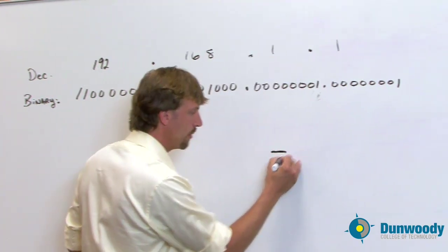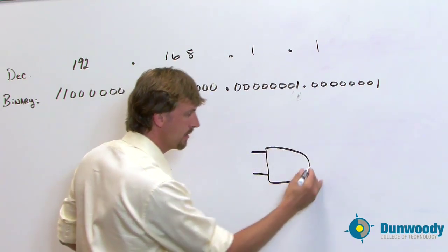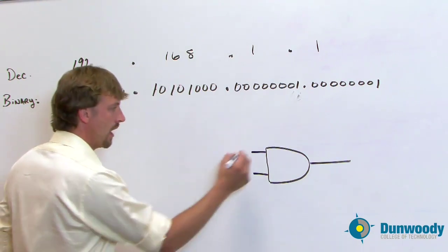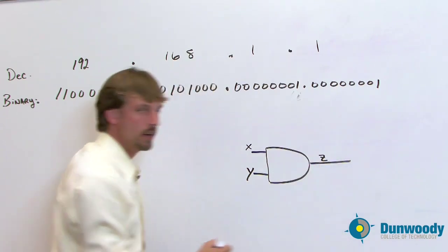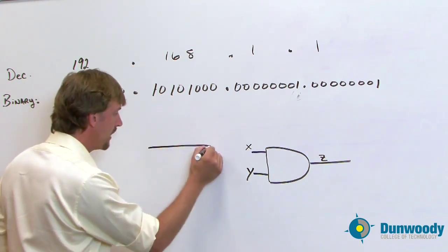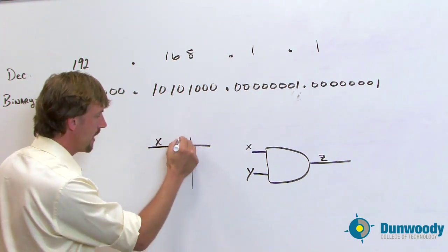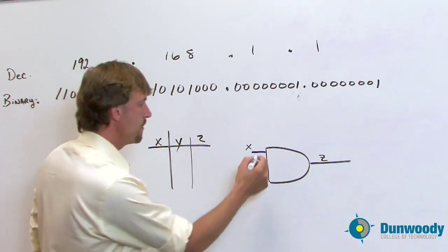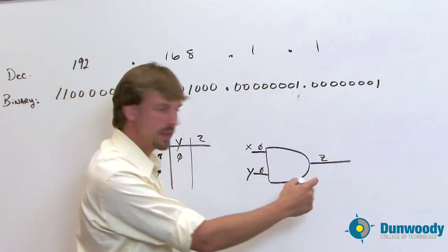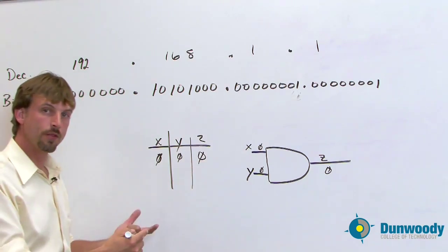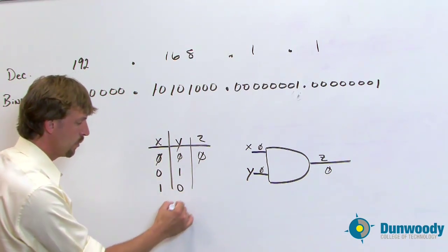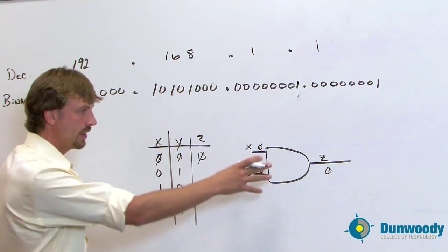If we look at an AND gate briefly, this is what an electronic diagram of one looks like. It takes in signals on the inputs and produces an output. If we give the inputs labels, we can assign 1s and 0s and see what the output looks like. We draw what's called a truth table. We have two inputs, x and y, and the output is z. If I place a 0 and a 0 on the two inputs, the output on an AND gate is 0. Counting in binary, we go 0,0 then 0,1 then 1,0 then 1,1.